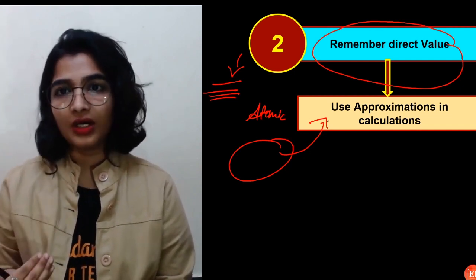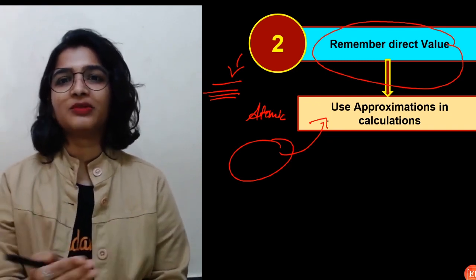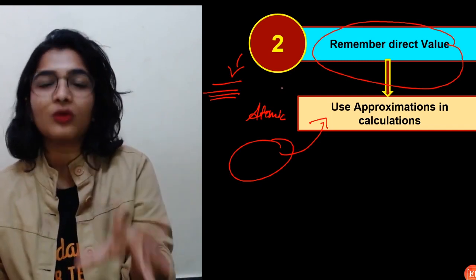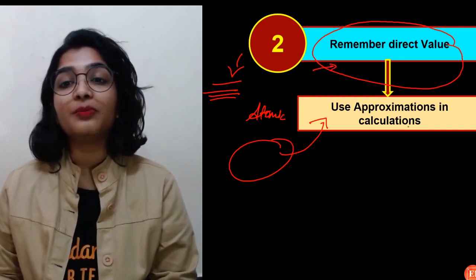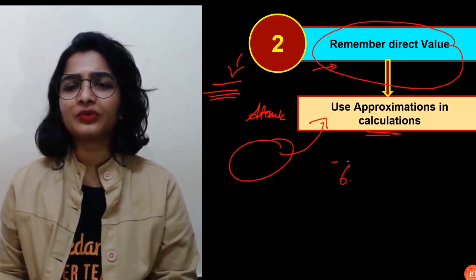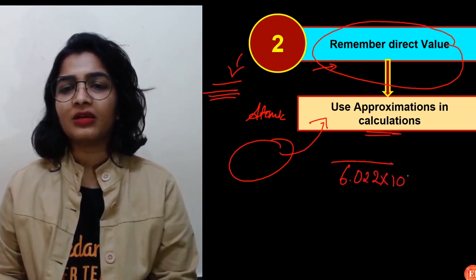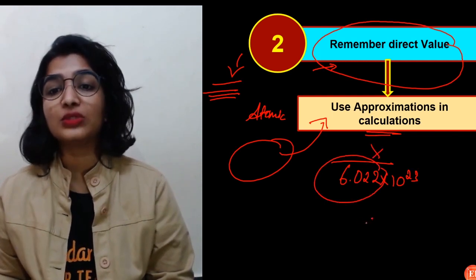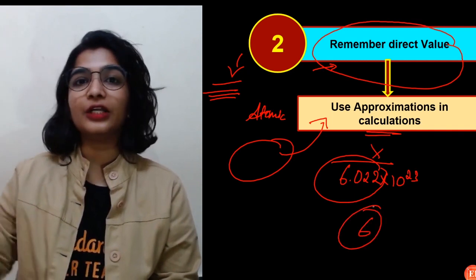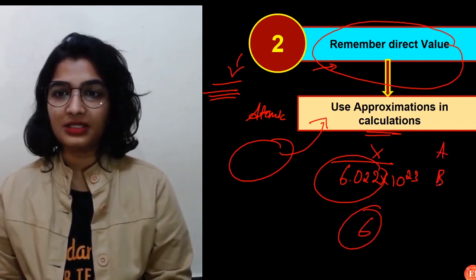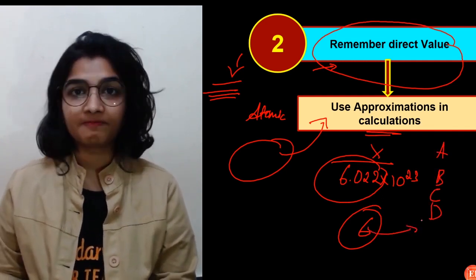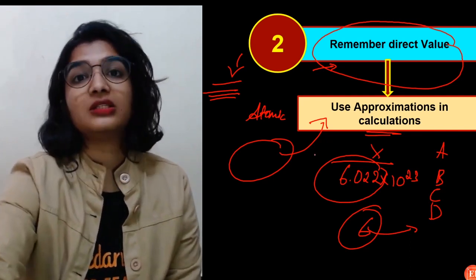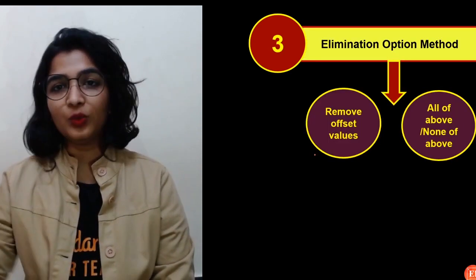So try to remember the direct values. See what happens if you practice a lot. If you have gone through a lot of question papers, previous year question papers, sample papers and all that, you might have seen some values, some formulas, which appears everywhere or very frequently, right? So try to remember those values and use approximations in calculations. That is, you have to just divide something by Avogadro number. I don't want you to divide that number X by Avogadro number. Just use 6. 0.022 ko ignore karun. See, but because anyway, you will be having four options. A, B, C, D. So the nearest one will be the right one. Because 6.022 se divide karna is kind of difficult. Ha na? So that is the reason use approximations in calculations that will save your time. And anyway, the nearest answer will be the right one.